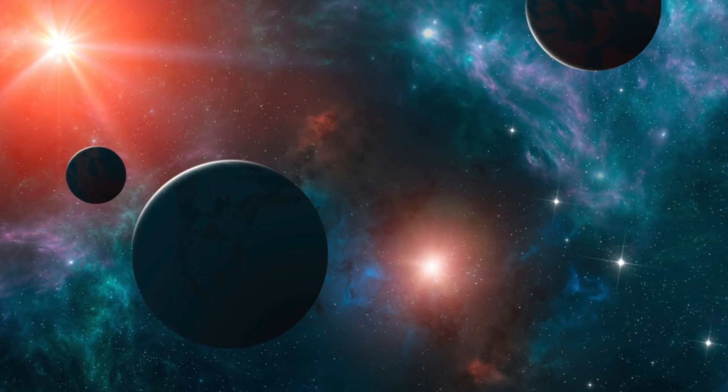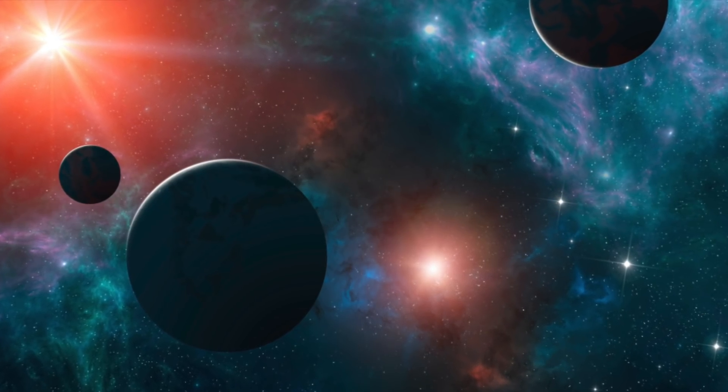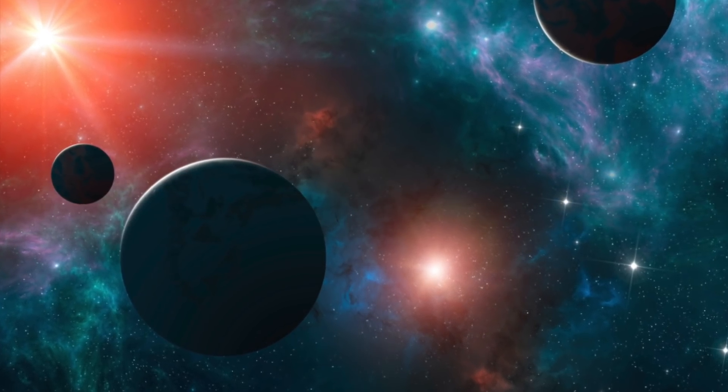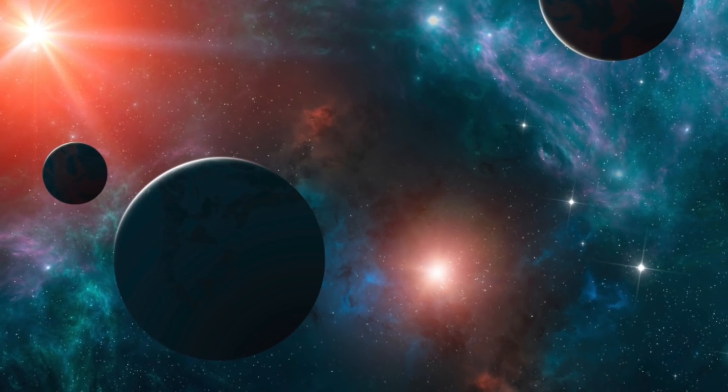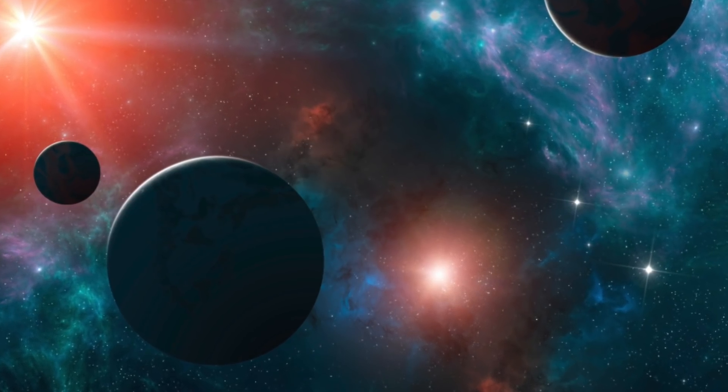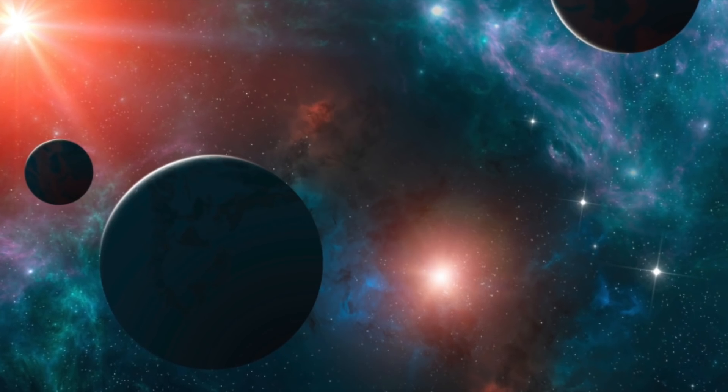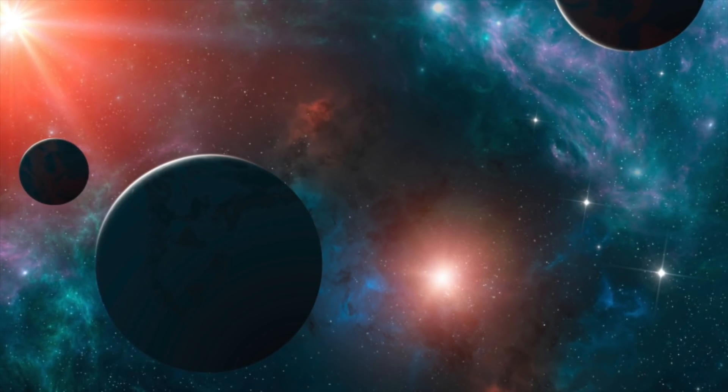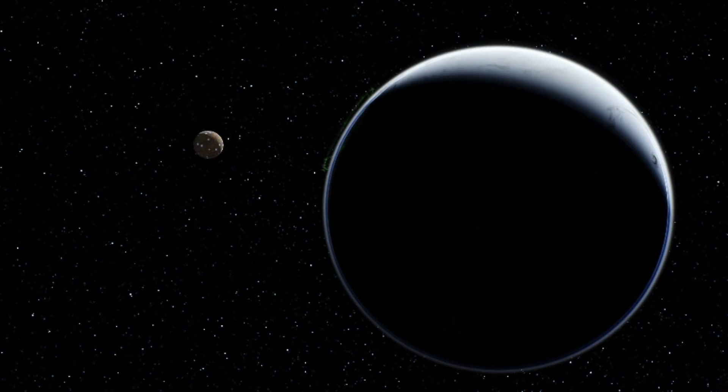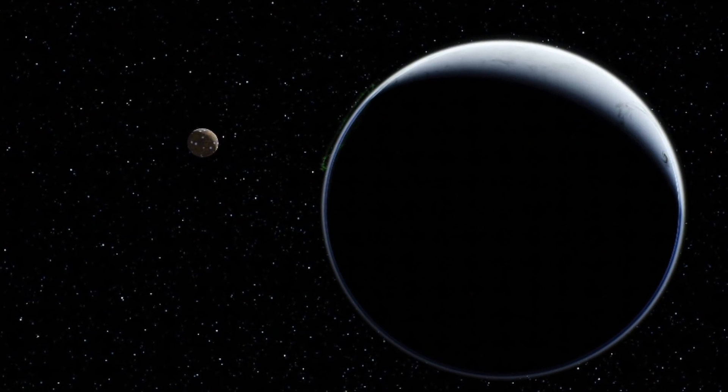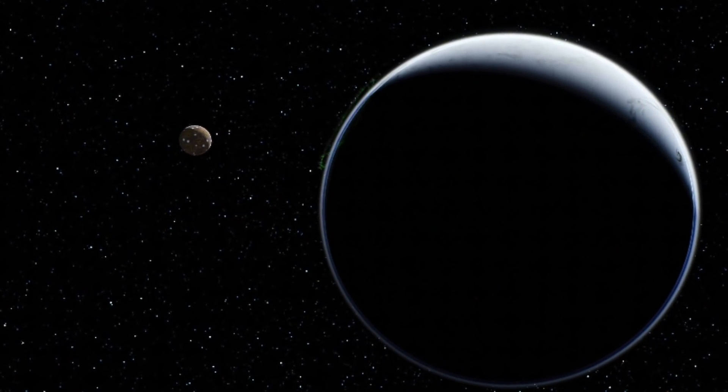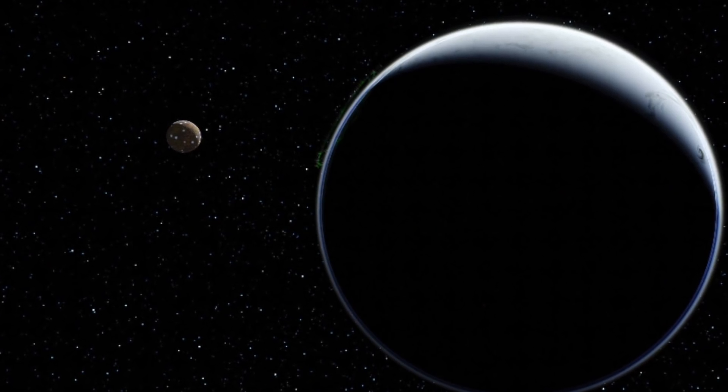The trans-Neptunian body called 2021 XD7. Almost everyone is familiar with the seven other planets that orbit the Sun alongside Earth in our solar system, each accompanied by their many moons. However, there are also hundreds of other bodies which are not large enough to be considered planets that circle around the Sun on the outskirts of the Milky Way.